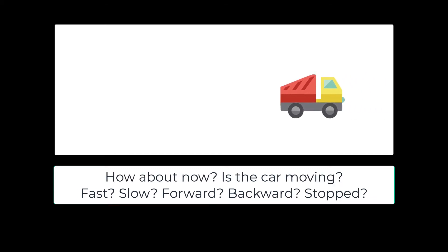Let's assume that the car's motion is always the same and it doesn't change. Now can you tell if the car is moving at this point? Is it moving fast or slow or forward or backwards? Is it stopped? How do you know?